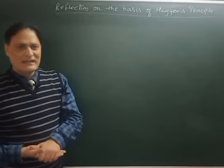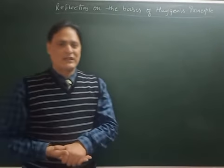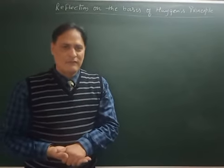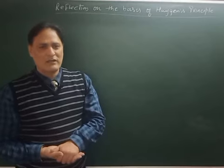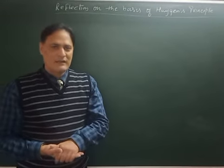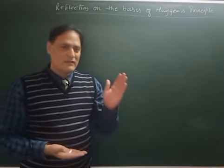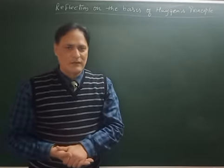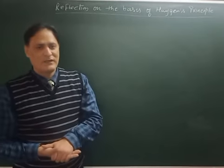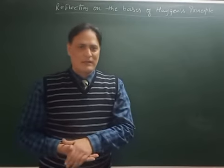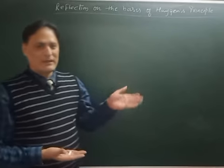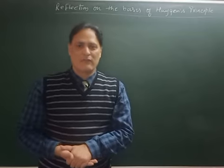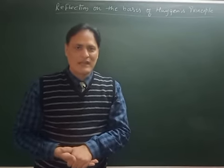During the phenomenon of reflection, the speed of light, frequency of light, and wavelength of light, all three physical quantities remain constant. Between the incident ray and reflected ray, these three quantities - velocity, wavelength, and frequency - do not change. We have to explain that angle of incidence is equal to angle of reflection by using Huygens principle.